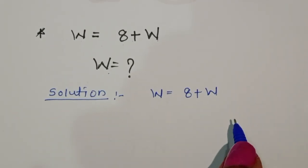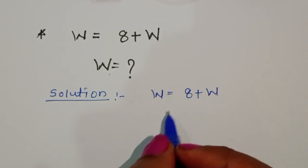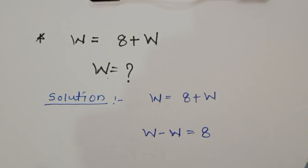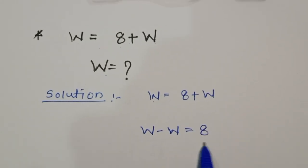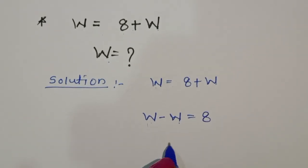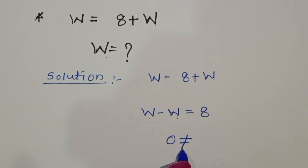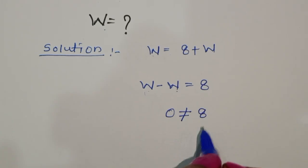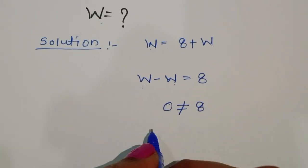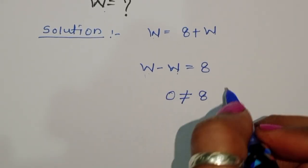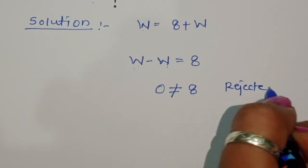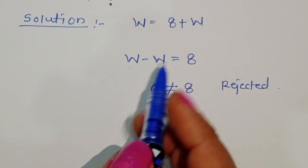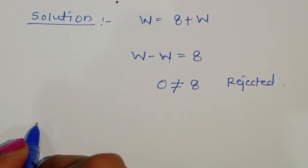In the first method, we take w minus w equal to 8. But w minus w is 0, which is not equal to 8. So this shows there is no solution using this method, and we have to reject it. Now we solve this equation using a second method.